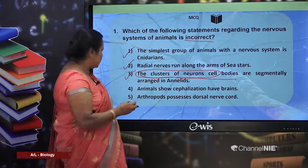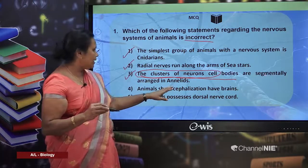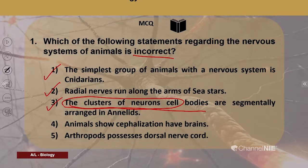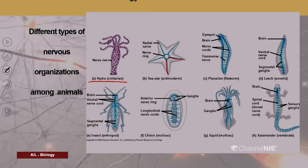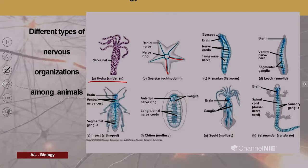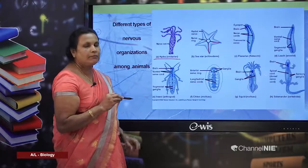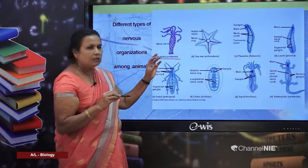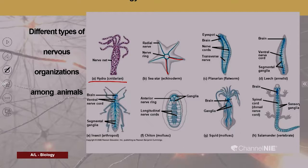Fourth option: animals showing cephalization have brains. Looking at the diagrams, with cephalization most organisms develop a brain region in the anterior area where ganglia are concentrated. Platyhelminthes show a certain degree of cephalization and have a small brain. Annelids such as leeches also have a brain in the anterior region. Therefore, animals showing cephalization have brains — this is a correct answer.